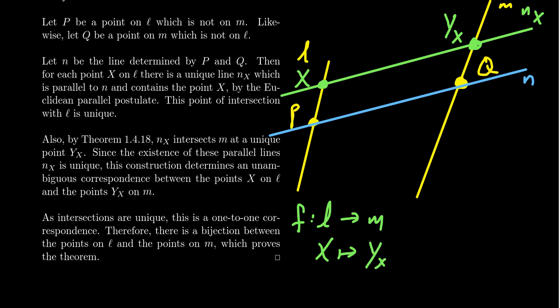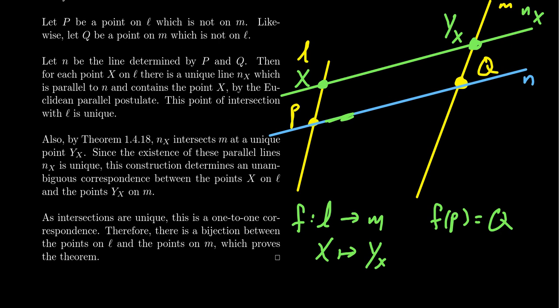I'll note that f(P) is identified with the point Q, because there's a unique line parallel to n that passes through P — and that's n itself, since n is considered parallel to itself. So Q is the point y_P, but we'll just continue to call it Q. This is a well-defined map, because given any point on L, there's only one point on M it's going to be identified with.